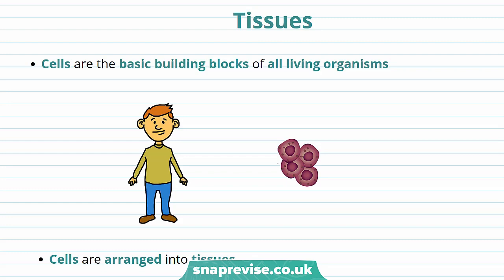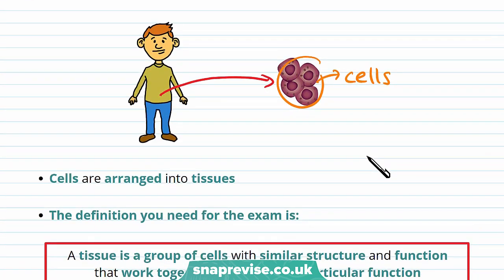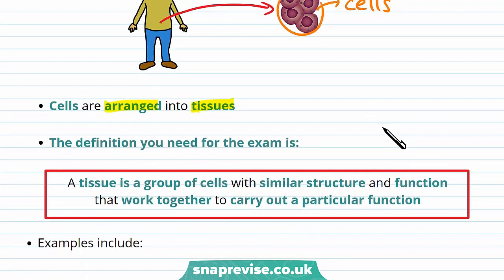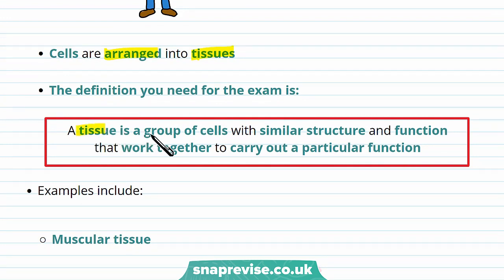So first let's talk about tissues. We said before that cells are the basic building blocks of all living organisms. Our body has trillions of cells. So how are cells organised? Well, cells are arranged into tissues. The definition you need for the exam is that a tissue is a group of cells with similar structure and function that work together to carry out a particular function.